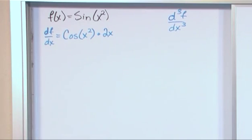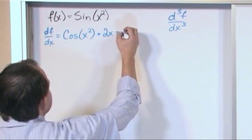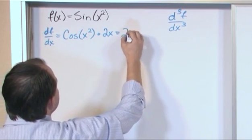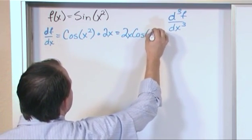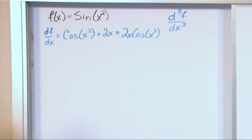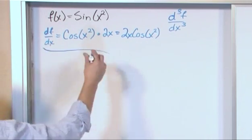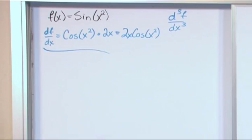Okay? So just to sort of keep it all compact on the same line when you rewrite this, you'll have 2x cosine x squared. And that's the first derivative. So if your question was find the first derivative, that would be the answer.